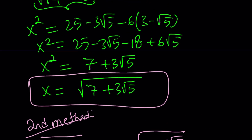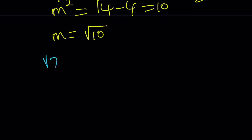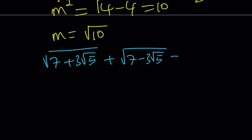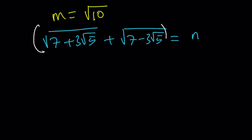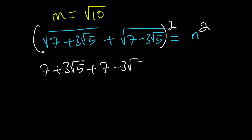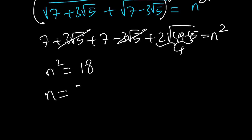This doesn't really help because in our original expression we have 3 root 2, so the difference didn't give us what we were looking for. Let's try the sum, and call it N. Squaring both sides gives 7 plus 3 root 5 plus 7 minus 3 root 5, plus 2 times the square root of 49 minus 45, which is 2 times 2 equals 4. So N squared equals 14 plus 4, which is 18, and N equals square root of 18, which is 3 root 2.